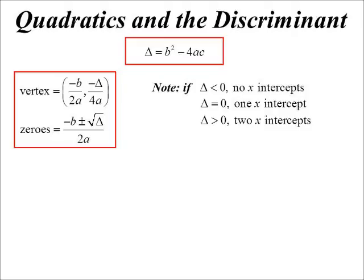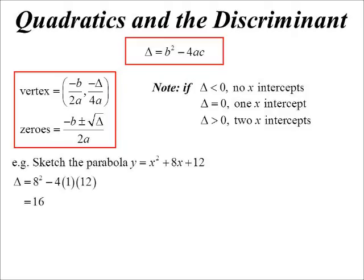So that's a quick way of looking at it, rather than solving the whole thing. I'm just going to look at that b squared minus 4ac to find out that piece of information. All right, back to yesterday's question. Sketch the parabola y equals x squared plus 8x plus 12. Well, the discriminant for this one turns out to be 16.